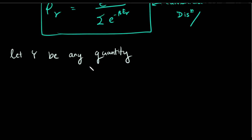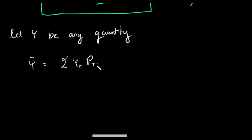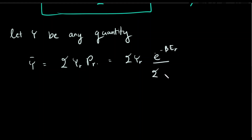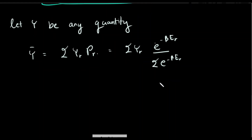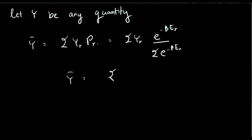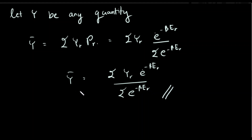Using the canonical distribution, we can calculate the mean value of any quantity y. The mean value is given by the summation of yr times Pr, which equals the summation of yr times e to the power minus beta Er, divided by the summation of e to the power minus beta Er.